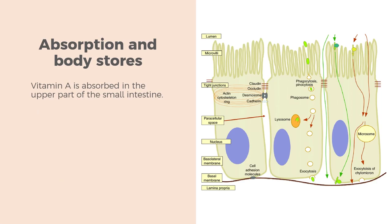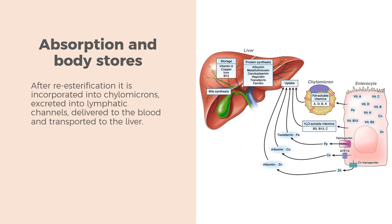Vitamin A is absorbed in the upper part of the small intestine. Provitamin A carotenoids can be cleaved into retinol via an enzymatic process. Preformed vitamin A occurs as retinol esters of fatty acids. They are hydrolyzed and retinol is absorbed into intestinal mucosal cells. After re-esterification, it is incorporated into chylomicrons, excreted into lymphatic channels, delivered to the blood, and transported to the liver. Vitamin A is stored in the liver as retinol esters, with stores enough for one to two years in most adults living in industrialized countries.